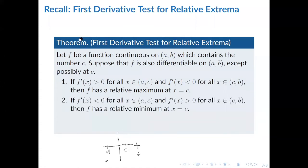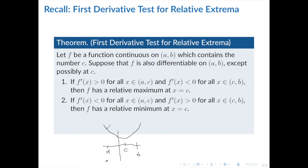We also have the case where if f prime is negative for all x in the first portion of the interval and positive on the next portion — just flipping the signs — we get that f has a relative minimum at x equals c. The picture you can use for this is an upward-opening parabola, where f prime is negative on the left and positive on the right, giving a relative minimum at c.